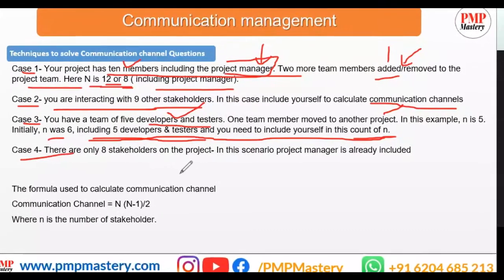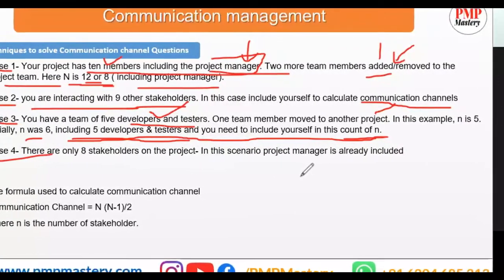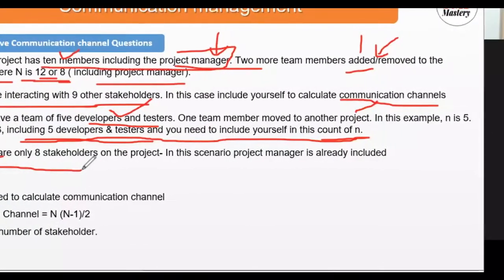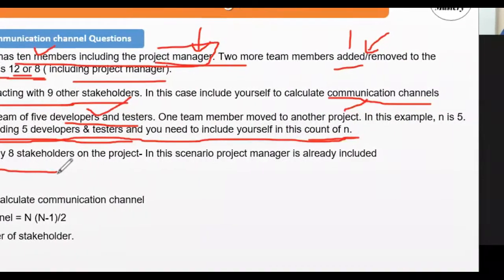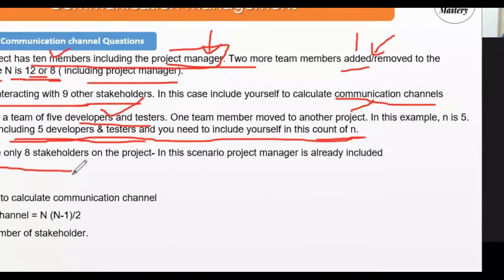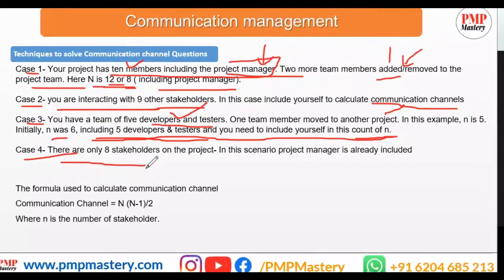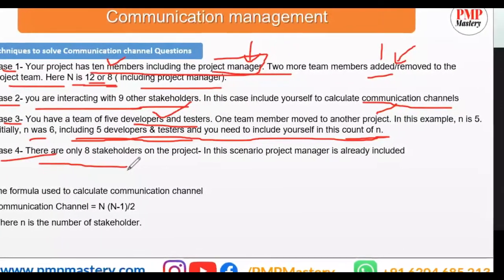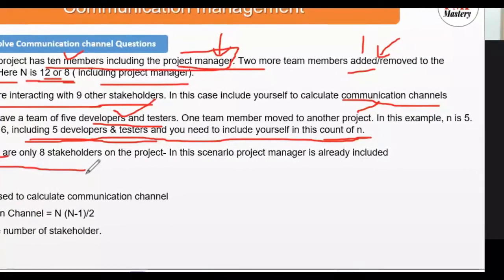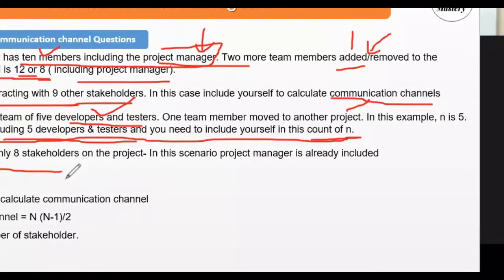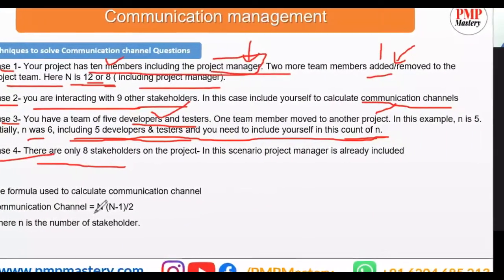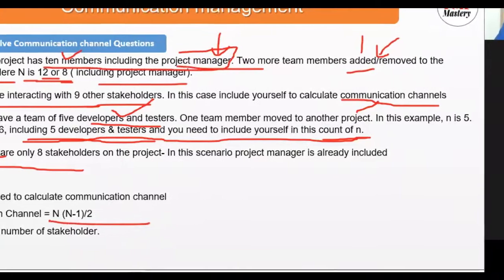Case four: there are only eight stakeholders on the project. In this scenario the project manager is already included in that count, so you do not add one more for the project manager. Keep these cases in mind when reading communication channel questions. The formula is n(n−1)/2, where n is the total number of stakeholders.